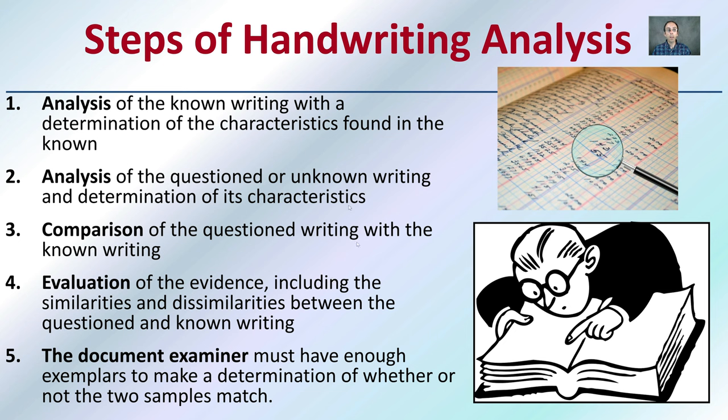Now, steps of handwriting analysis. We want to analyze the writing with a determination of characteristics found in the unknowns. We want to analyze that. The questioned unknown writings. We want to offer that comparison between the two. We want to evaluate that comparison for evidence, including the similarities and dissimilarities between those. And the document examiner will be the one that must have enough exemplars to make that adequate comparison between the two.